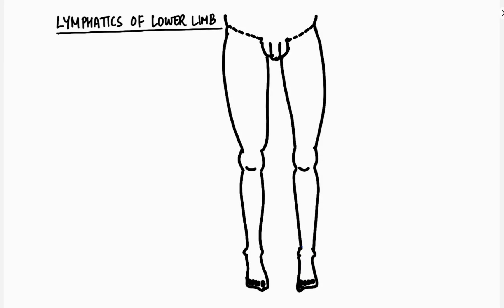Hello everyone. Let us discuss lymphatics of the lower limb today. The lymphatics of the lower limb are divided into a superficial group and a deep group.